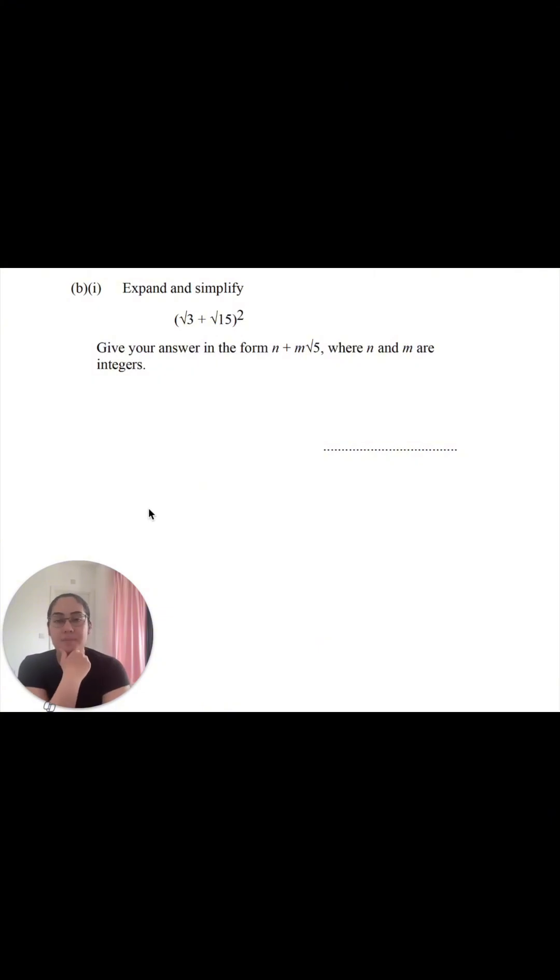So let's start with this one. It says expand and simplify root 3 plus root 15 in bracket and the whole bracket's been squared. Give your answer in the form of n plus m root 5 where n and m are integers, which means we don't want to deal with decimals or fractions of any sort.